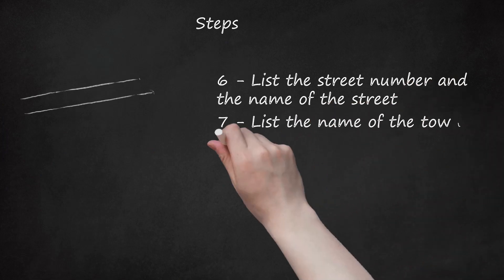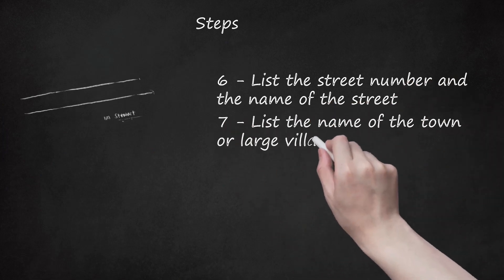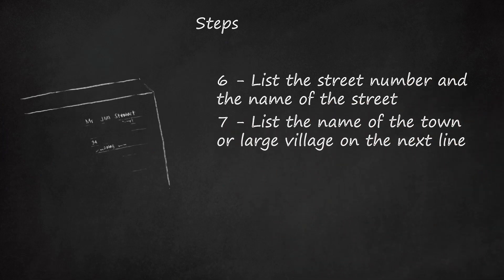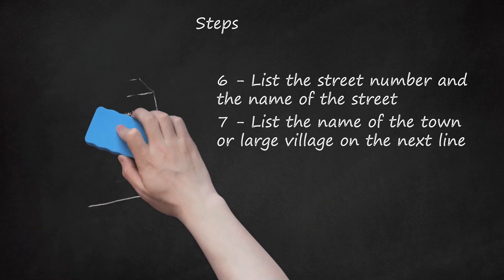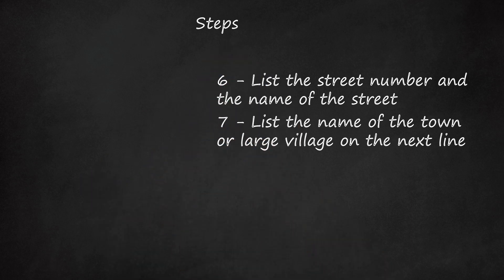Step 7. List the name of the town or large village on the next line. You only have to do this if there is another street within the post town that has the same name as the street your recipient is located on. If the street you are mailing your letter to is the only street with that name in the post town area, you do not need to include the city or town name. Continuing the Jim Stewart example: Mr. Jim Stewart, British Imports, Exports, Pilton House, 34 Chester Road, Greenway End.